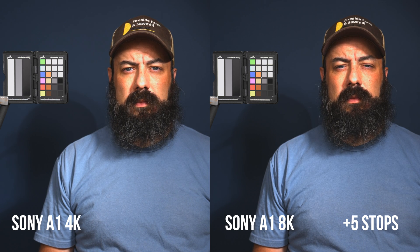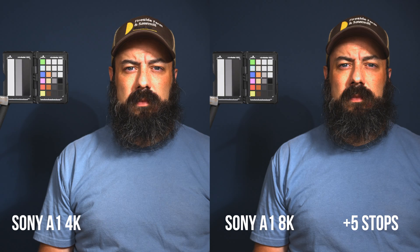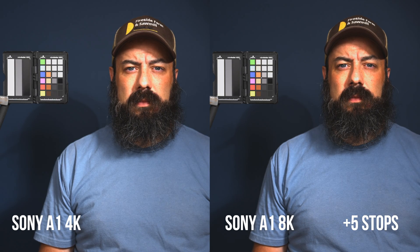In terms of overexposure, the 4K and 8K looked pretty similar on the A1. I'd say they were really good through four stops over and the image started to break at five stops — pretty similar to the R3 in its 4K mode. So let's take a look at the underexposure.